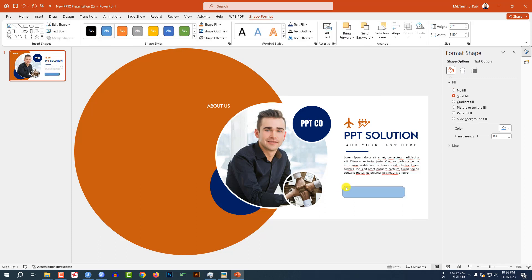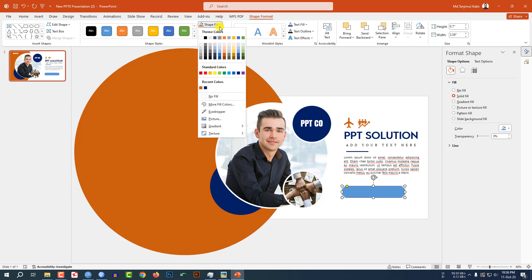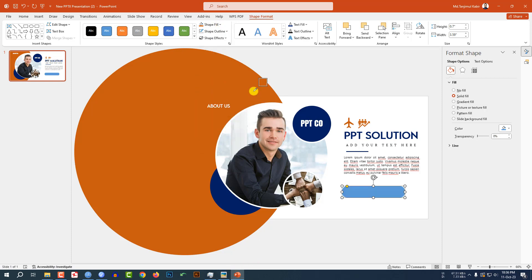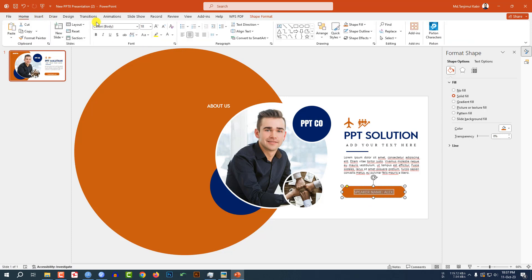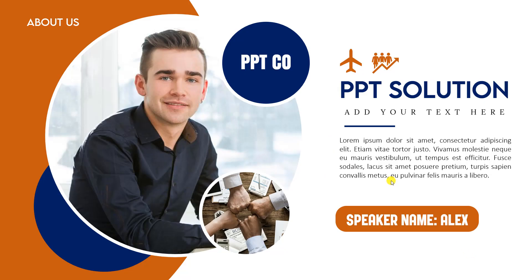Go to Insert, go to Shape, pick a Rounded Corner Rectangle shape, and drag it over here. Make it sharper using the corner point. Shape Outline — no outline. Shape Fill — use the Eyedropper to select the fill color. Write the speaker name, select it, change the font and increase the font size — it will look beautiful. Watch the slideshow and you will find this amazing result.